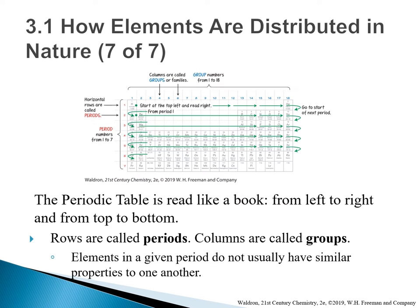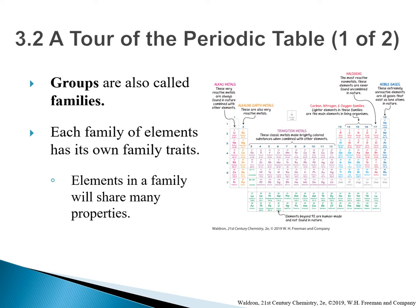The periodic table is read like a book, from left to right, and from top to bottom. Horizontal rows are called periods — there are seven periods. The vertical columns are called groups or families, and they are grouped from 1 to 18. Elements in a given period do not usually have similar properties to one another. However, elements in the same family will share similar properties.